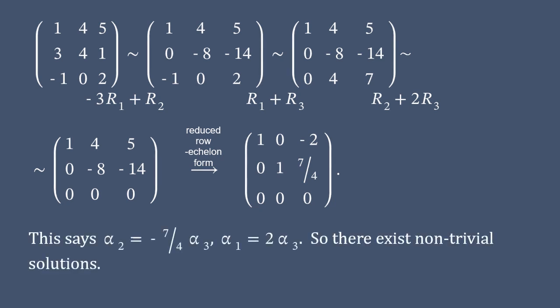This says that alphas are not equal zero, and we can determine the relation between them. So, there exist non-trivial solutions, and the rows of the given matrix are linearly dependent.